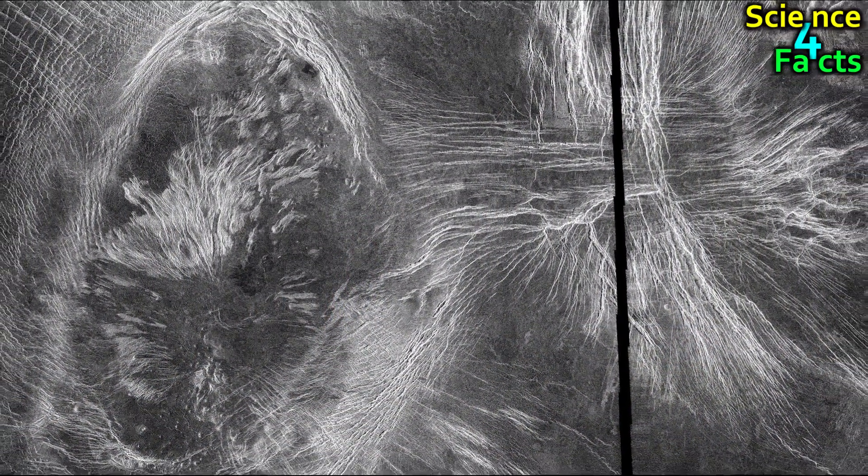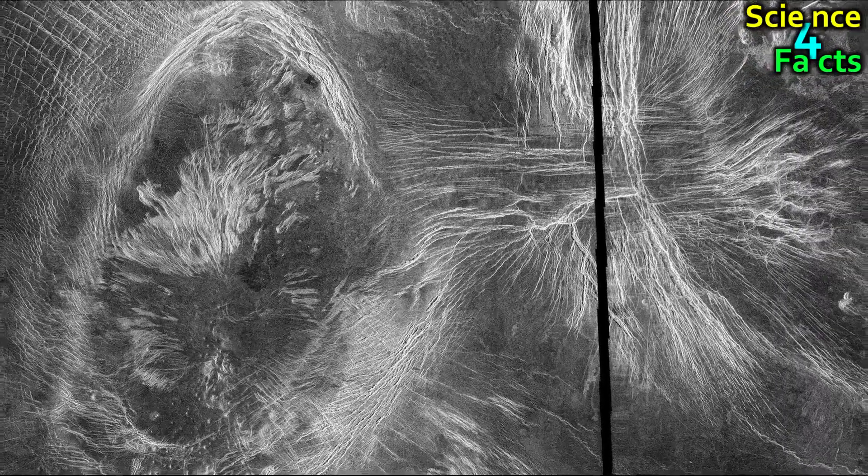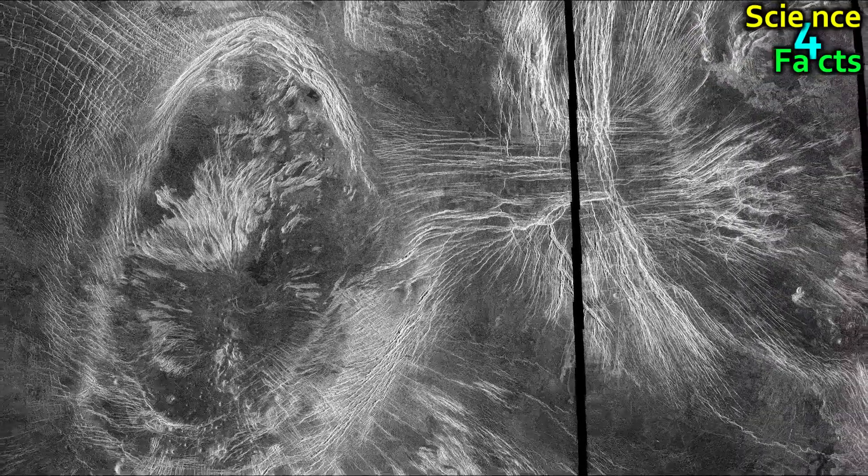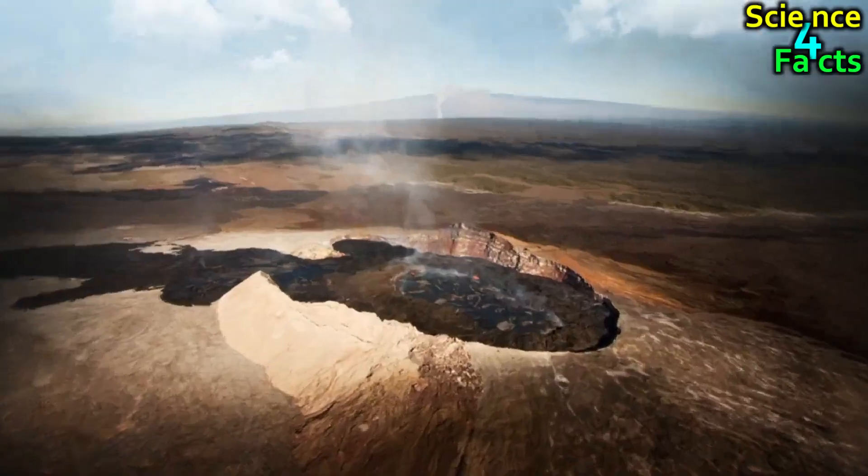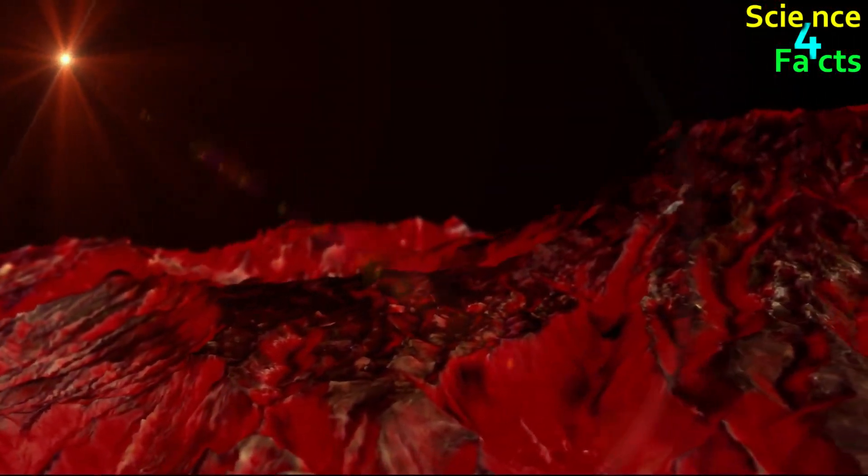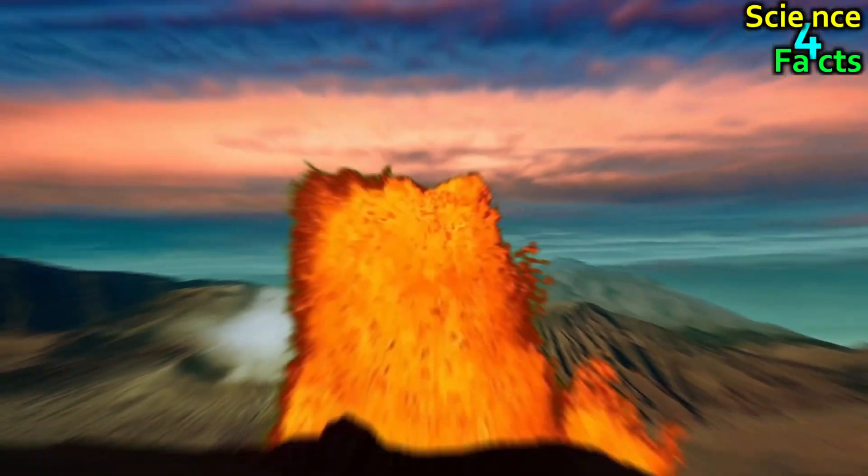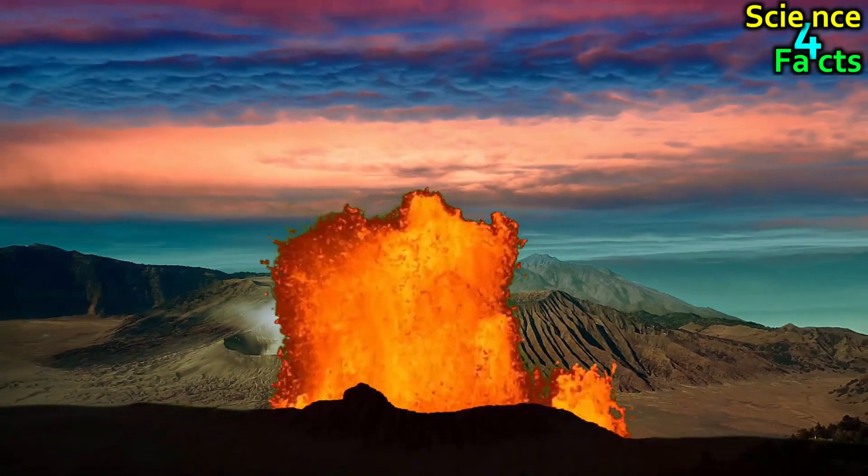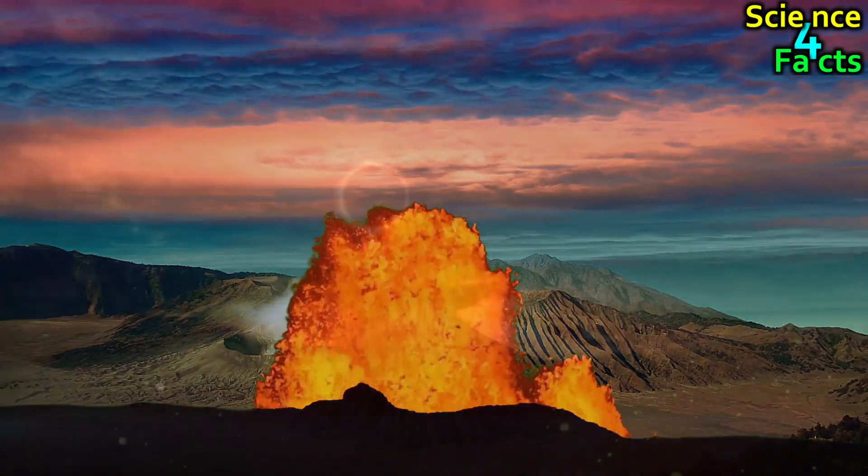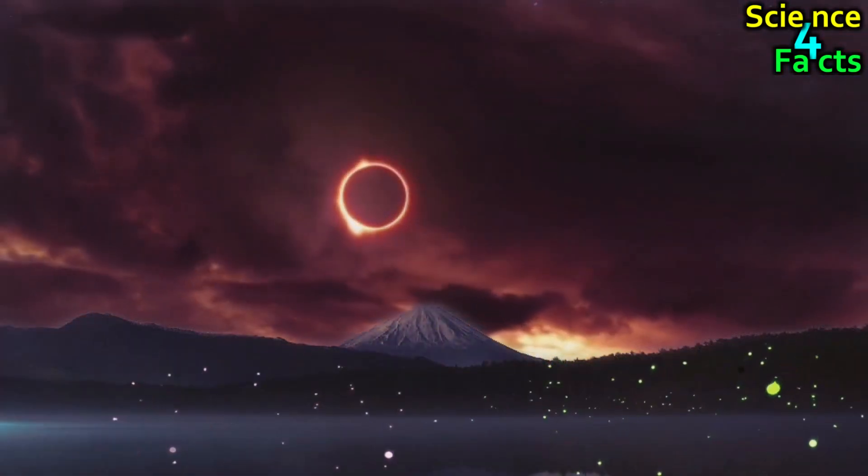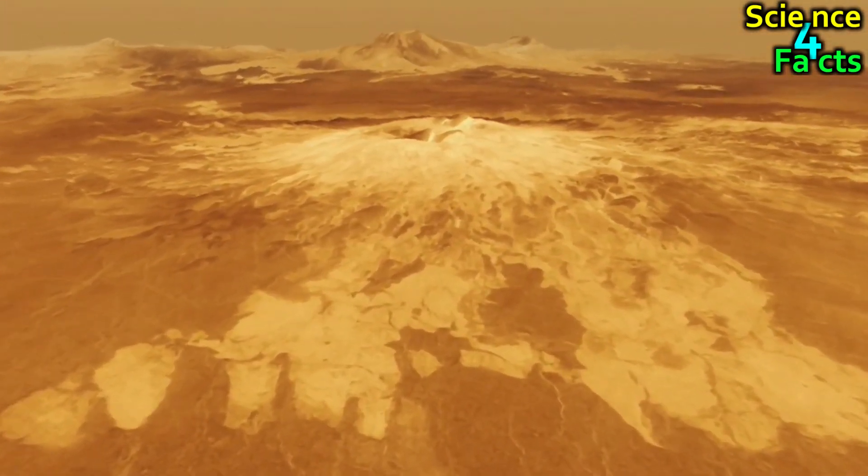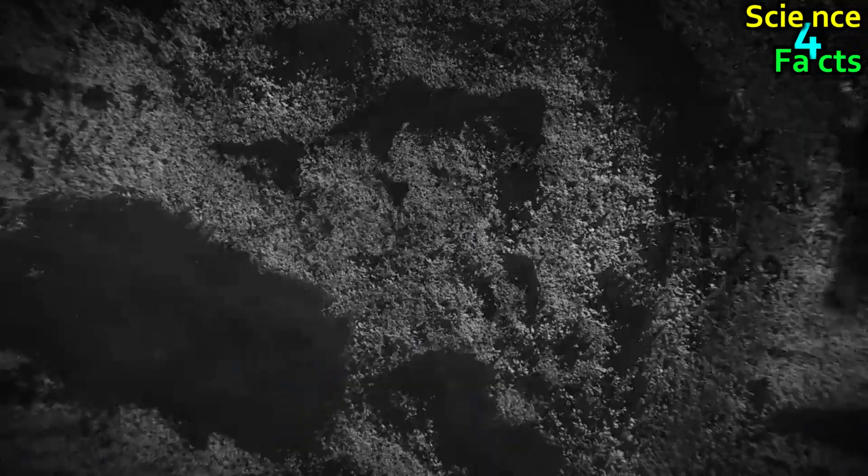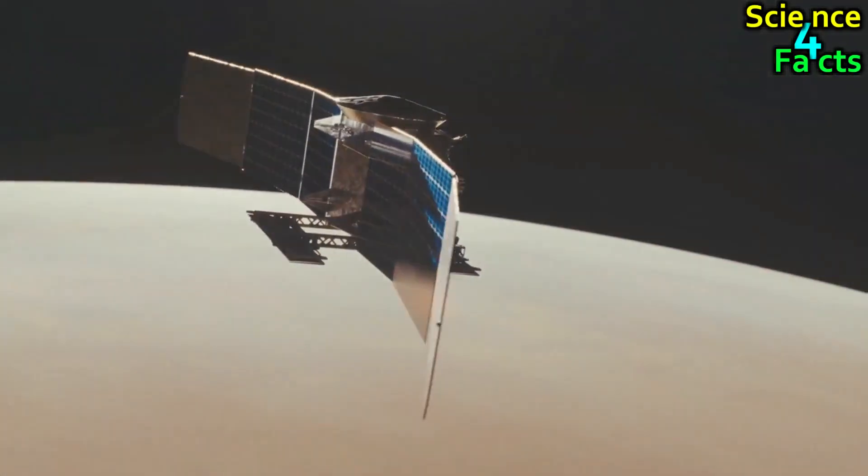One of the most unique features of Venus's surface is the presence of coronae, which are circular or elliptical features that resemble a bull's-eye target. These coronae are thought to have formed due to the upwelling of magma from beneath the planet's surface, which caused the overlying rock to fracture and form circular depressions. Overall, Venus's surface is a rugged and geologically active environment, with a history of volcanic activity and impact cratering. Despite the harsh conditions, it is a fascinating planet to study, as it provides us with insights into the processes that shape planetary surfaces and the conditions that can exist in other parts of our solar system.